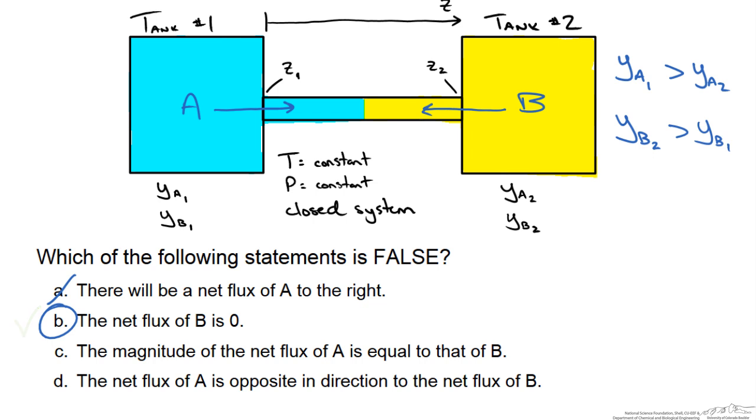Now the magnitude of the net flux of A is equal to that of B. So we are saying here that NA must equal the magnitude of NB. Since temperature and pressure are constant and we are working with gases, we know that the overall concentration must be constant in our system.